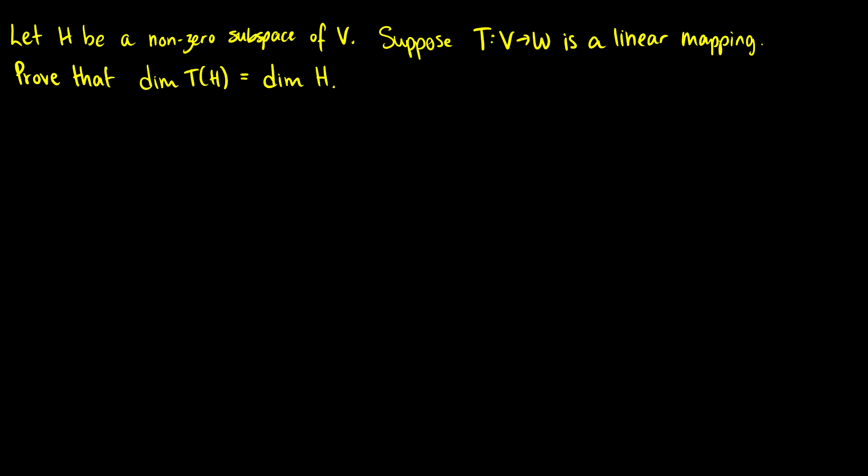In this video we're going to do a quick proof with dimensions and subspaces. Let H be a non-zero subspace of V. Suppose some linear mapping T from V to W, and we want to prove that the dimension of the transformation on H is equal to the dimension of H.